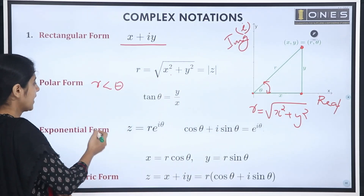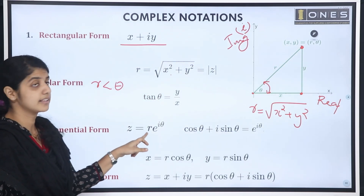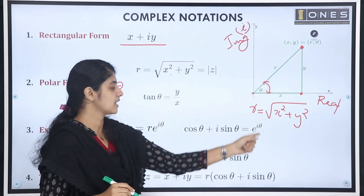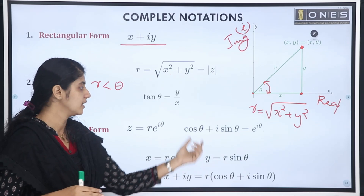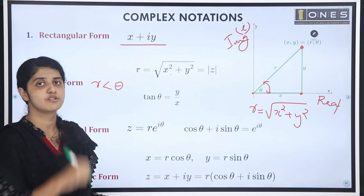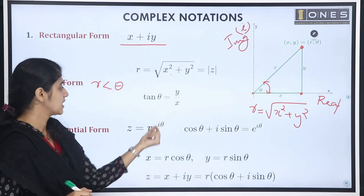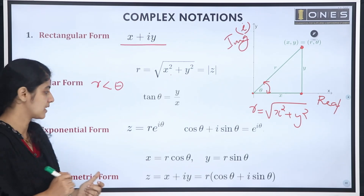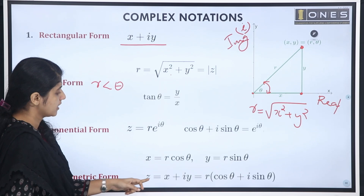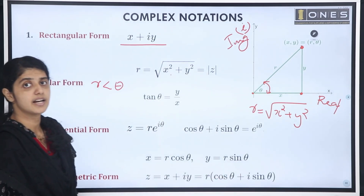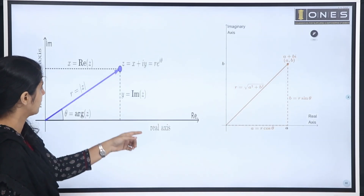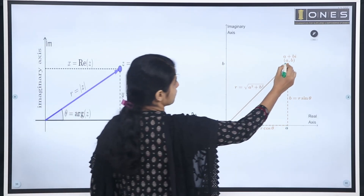Now for the polar form, if we consider the exponential form, the representation is r into e raised to i theta. The expression for e raised to i theta expands as cos theta plus i sin theta. So the trigonometric form is r cos theta plus i sin theta, where x equals r cos theta and y equals r sin theta.